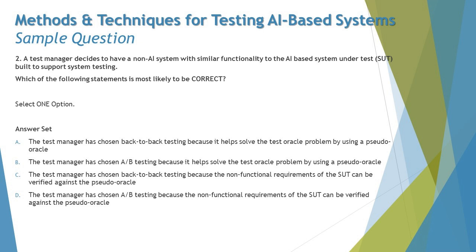Option C says the test manager has chosen back-to-back testing because the non-functional requirements of the SUT can be verified against the pseudo oracle. This should be incorrect because the resources and non-functional characteristics of a pseudo oracle and the SUT are likely to be different, so the alternative system cannot be used for non-functional testing. Functionality may be the same, but non-functional characteristics differ. Also, the question states they are doing it for system testing, and non-functional does not cover system testing.